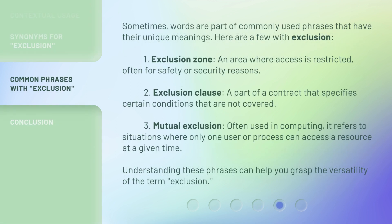Sometimes words are part of commonly used phrases that have their unique meanings. Here are a few with exclusion. One: exclusion zone — an area where access is restricted, often for safety or security reasons. Two: exclusion clause — a part of a contract that specifies certain conditions that are not covered. Three: mutual exclusion — often used in computing, it refers to situations where only one user or process can access a resource at a given time. Understanding these phrases can help you grasp the versatility of the term exclusion.